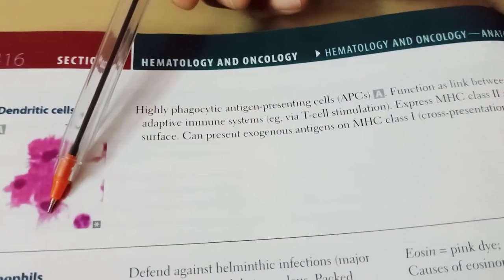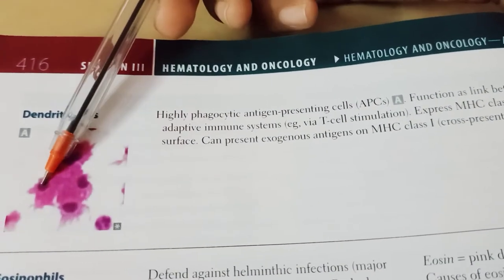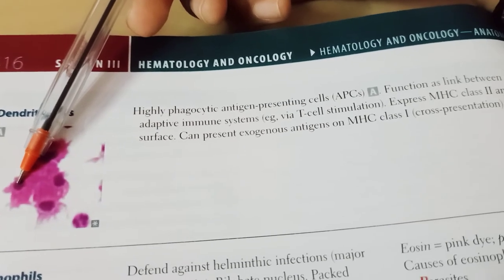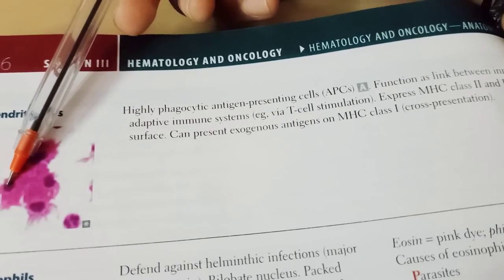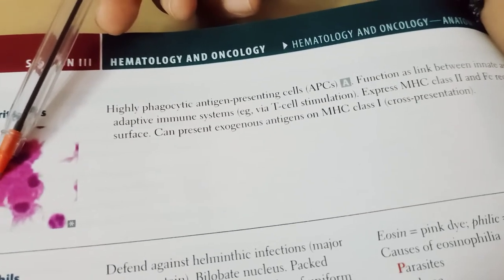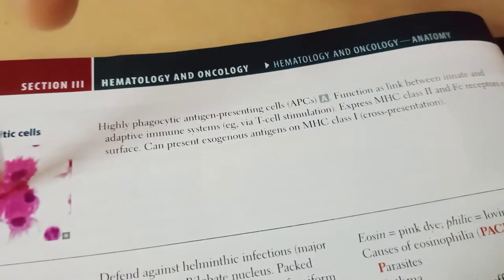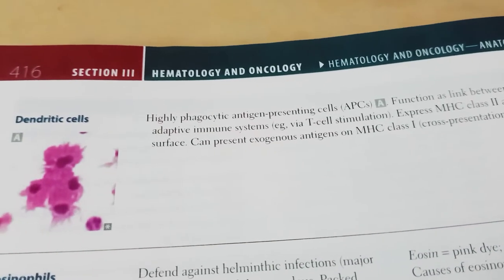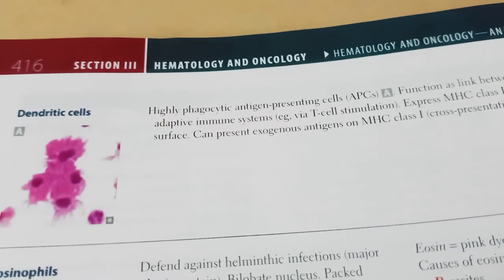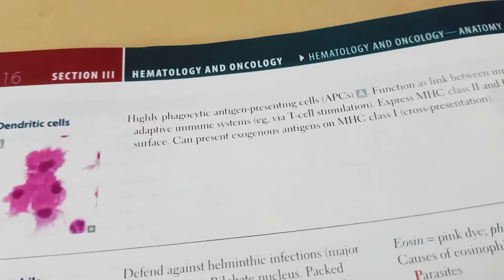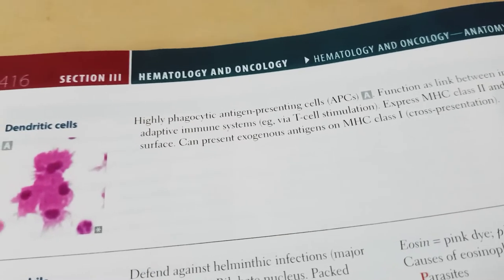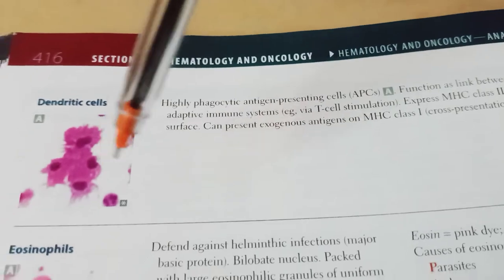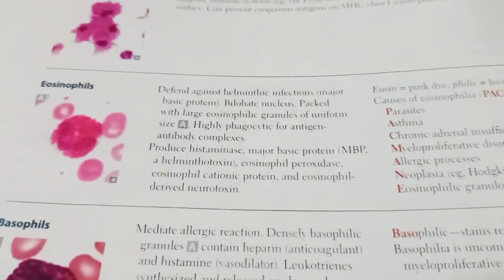Dendritic cells are highly phagocytic antigen-presenting cells that link the adaptive immune system by stimulating T cells. They express MHC class 2 and Fc receptors on their surface, and they can also present exogenous antigens on MHC class 1.